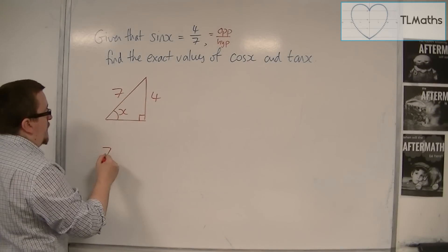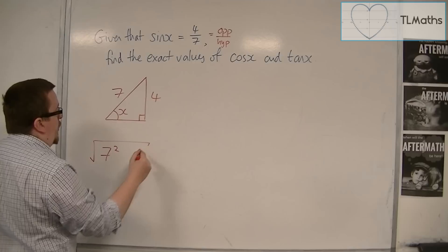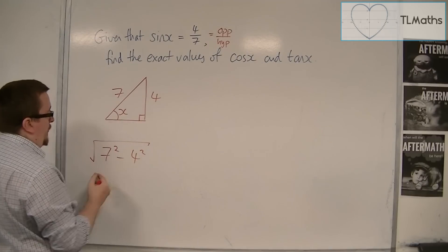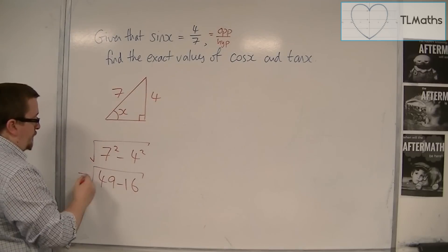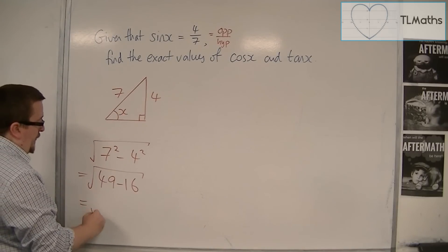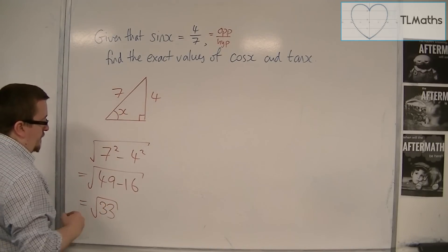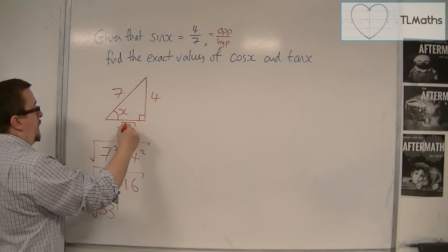So this side is the square root of 7 squared take away 4 squared. So the square root of 49 take away 16, which is equal to the square root of 33. So this length is root 33.